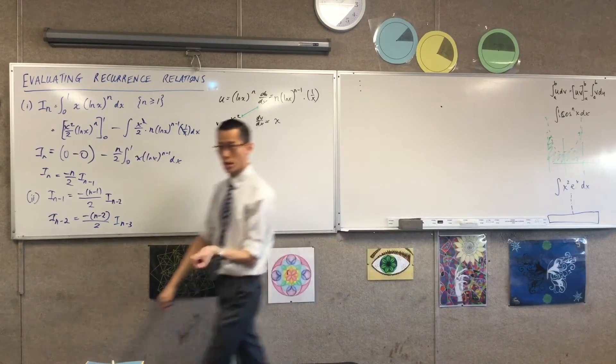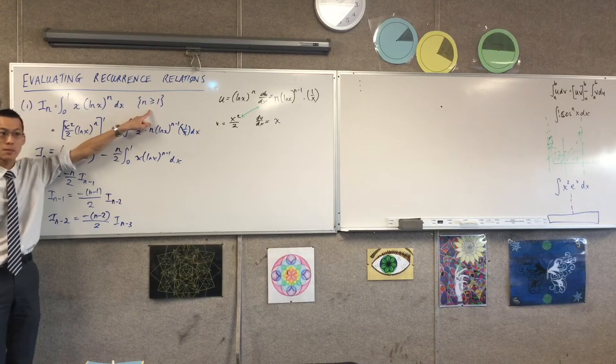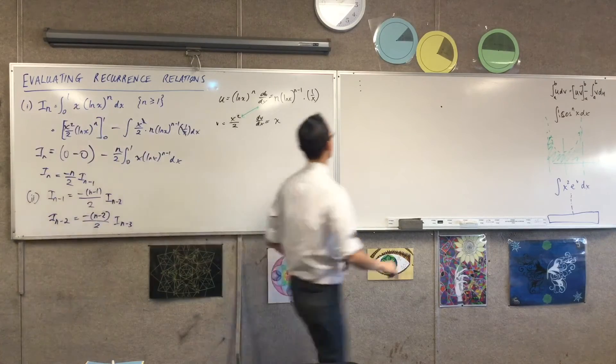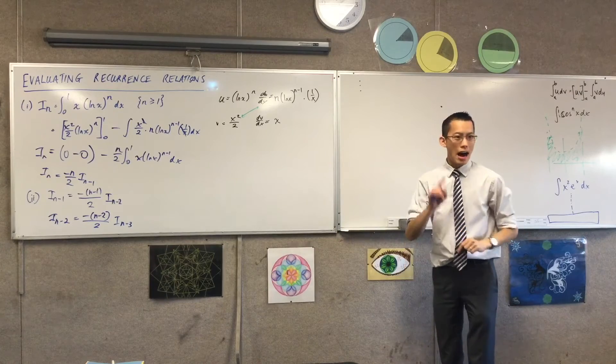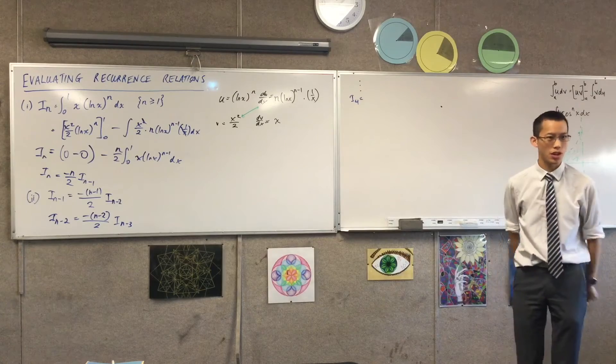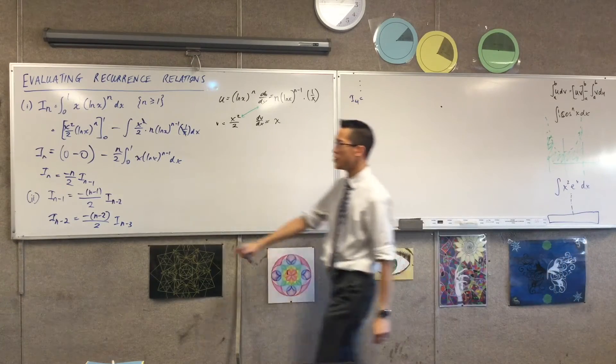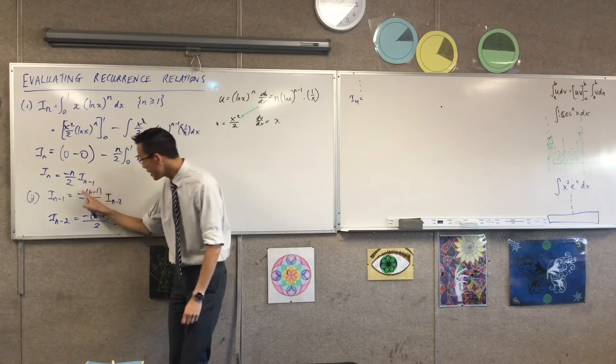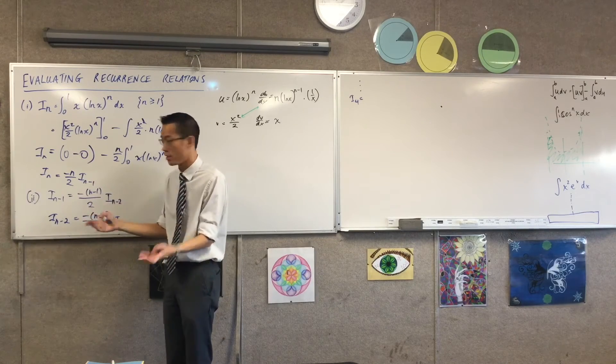Now the last term is going to be I1. There is no I0. So therefore, watch what happens. Yeah, you have to be careful. I'm going to actually start at I4. I want three more terms. But because the definition for In involves an In minus 1, then I want this one to be I1. Does that make sense? I don't want it to be an I0 because that doesn't exist.